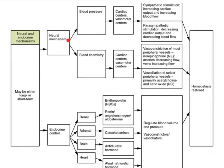For the neural mechanisms, we're going to be talking about the cardiovascular centers and how they impact heart rate and contractility, therefore cardiac output, as well as vasoconstriction versus vasodilation. When it comes to endocrine control and the various hormones — and they're not all listed here — what's nice about this particular flowchart is that it reminds us of all the different organs that function as endocrine regulatory structures for blood pressure.